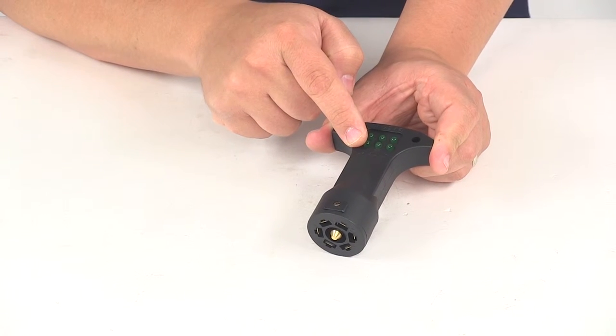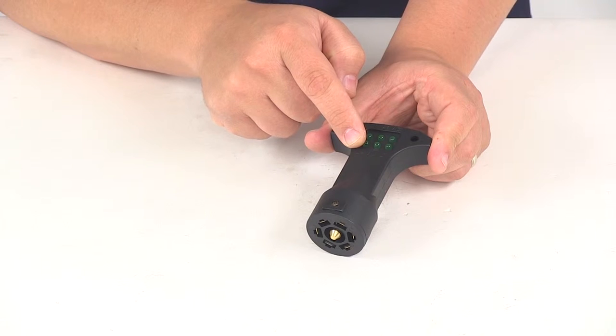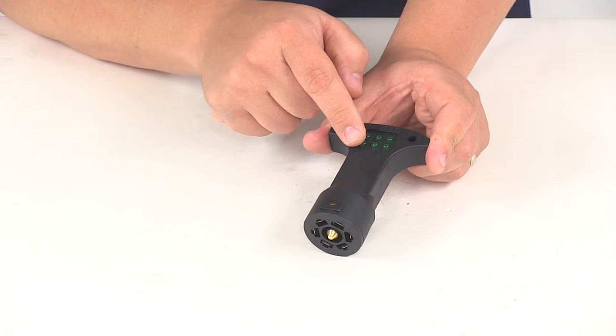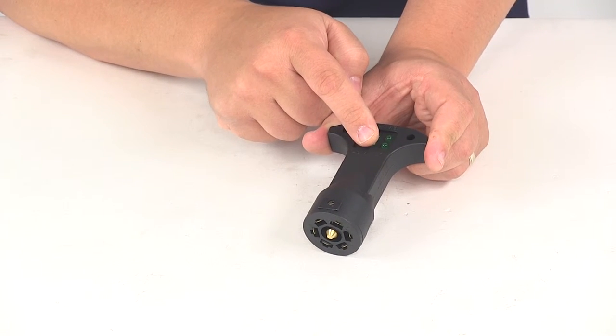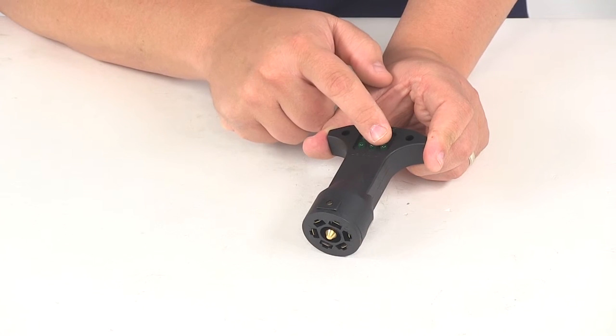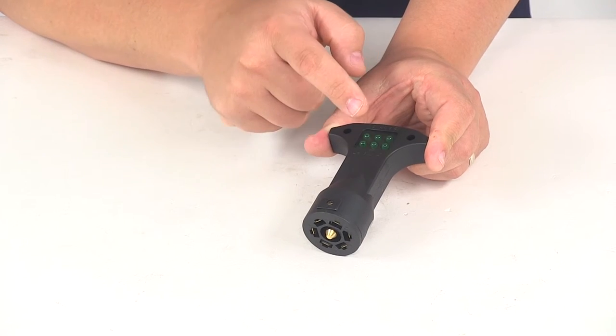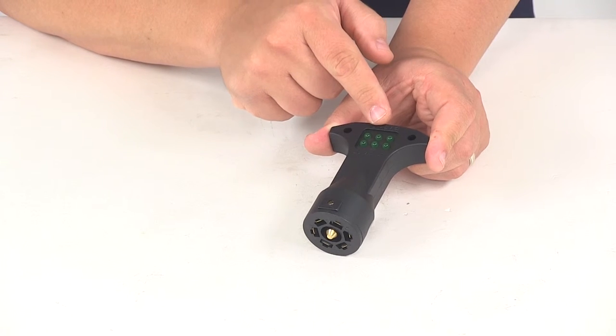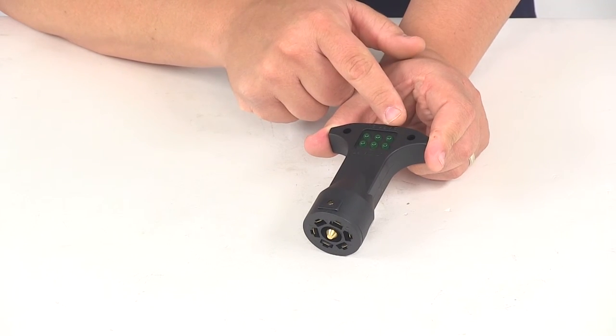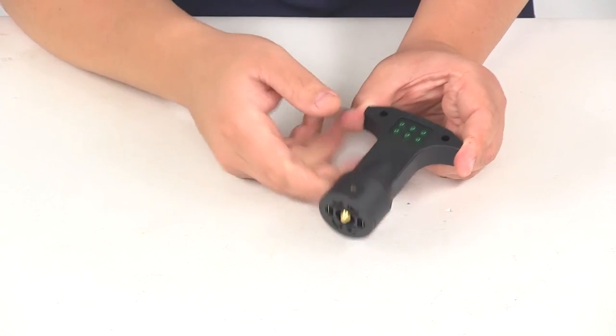RT signifies right turn and brake. TM is for tail lights or running lights. LT is for left turn and brake. BK is for the brake controller output or electric brakes, and 12V is the 12 volt power feed.